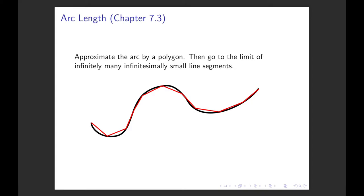Here you see an arc, so a curve, and we want to approximate it by a polygon, and then go to the limit of infinitely many infinitesimally small line segments, because we know the lengths of straight line segments and can use that in the limit to get the exact lengths.